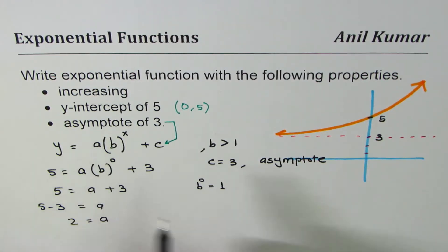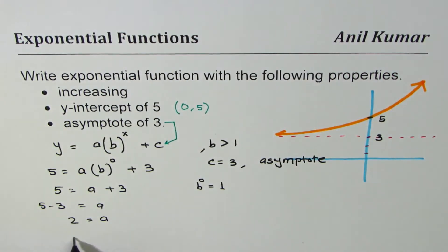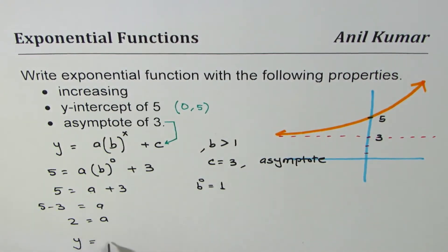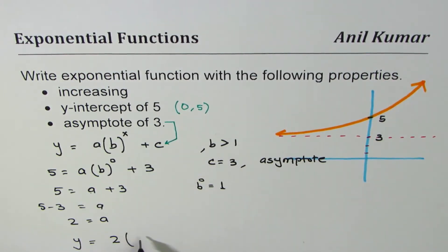3, and so we can write down the expression for the exponential function as y equals 2. Now for b, it is greater than 1. We could write anything, let me write 5 here.